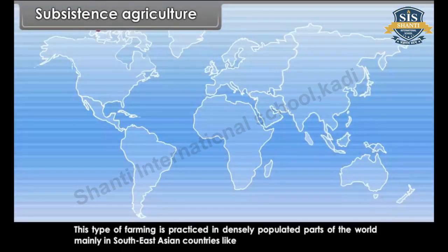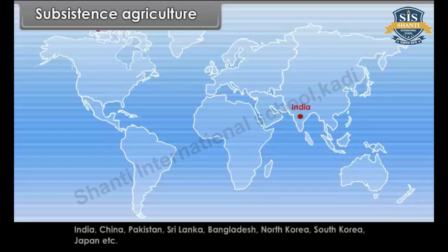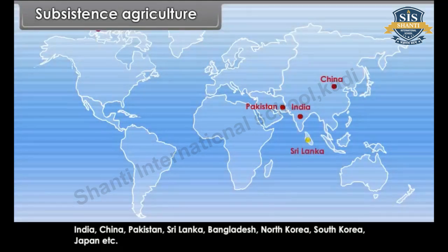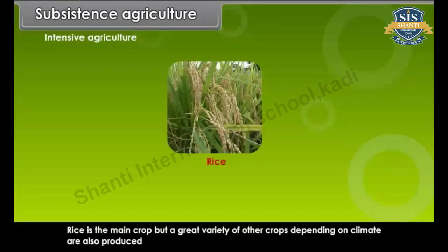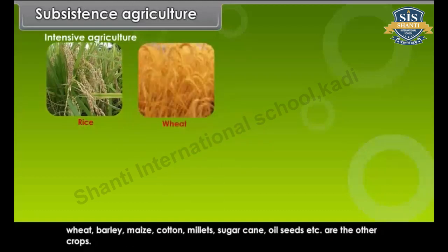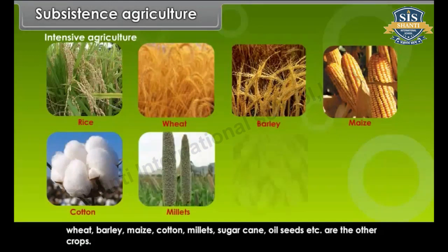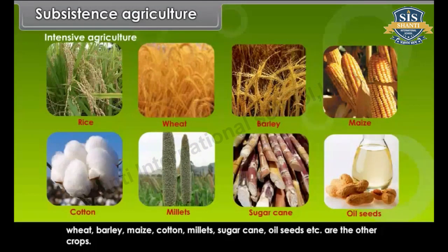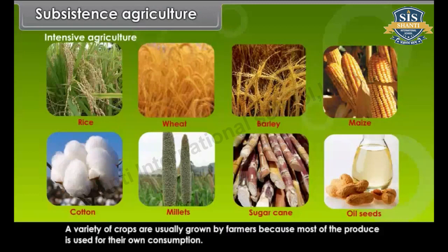The land is cultivated intensively so as to grow two or three crops a year. This type of farming is practiced in densely populated parts of the world, mainly in Southeast Asian countries like India, China, Pakistan, Sri Lanka, Bangladesh, North Korea, South Korea, Japan, etc. A variety of crops are usually grown by farmers because most of the produce is used for their own consumption.